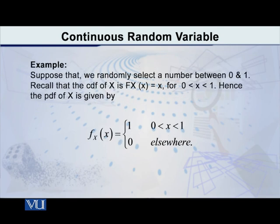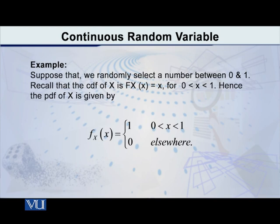I will give you a simple example of a continuous random variable. Suppose we randomly select a number between 0 and 1 — it can be any decimal number between 0 and 1, and we assume it is selected randomly. In this case, small f of X equals 1 for all X values between 0 and 1, and small f of X equals 0 elsewhere.